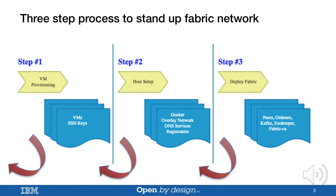In step two, these machines will have dependency software such as Docker, overlay network like Flannel, Registrator, and DNS services installed and configured. If you choose to use Kubernetes, a fully functional Kubernetes cluster will also be created. Step three is to deploy necessary Fabric components onto these machines. Those components are typically peers, orderers, Kafka, Zookeeper, and the Fabric CAs. You also have the option to build those components if you want to have the latest code running in your environment.